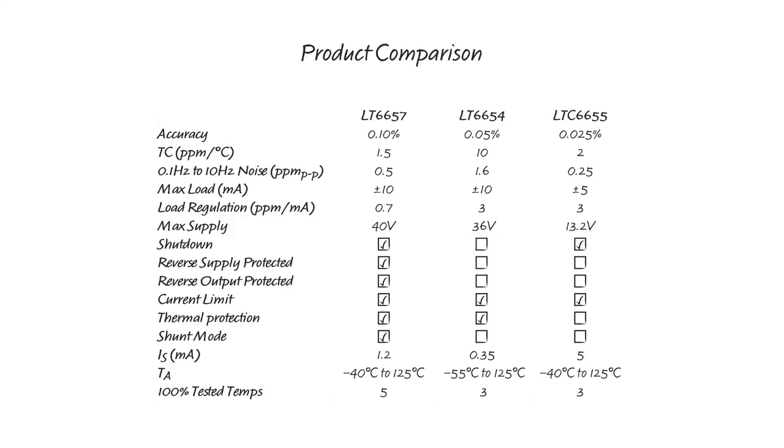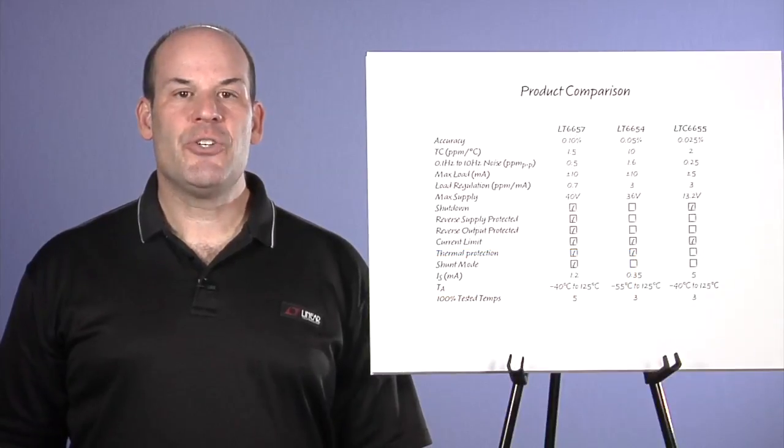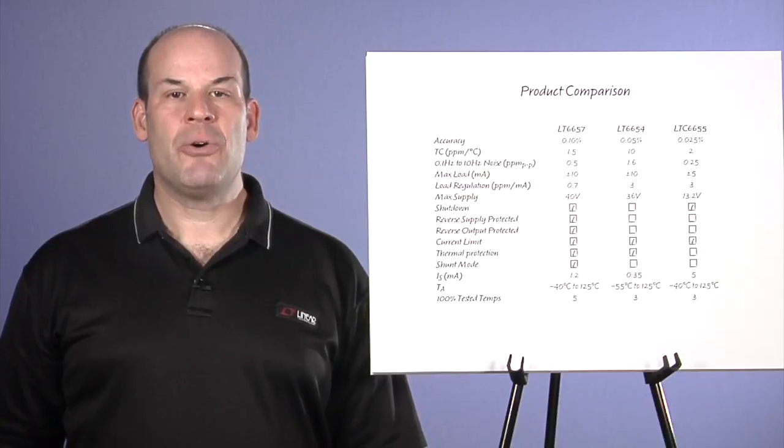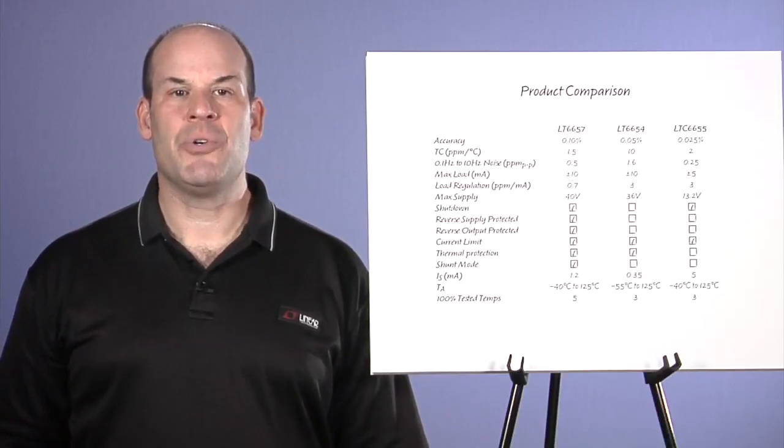In addition to the features common to voltage references, LT6657 also has a few more tricks up its sleeve, including protection from reverse supply and reverse output, giving even more robust performance in difficult environments. These features are often found in LDO power supplies but are not common in precision products.